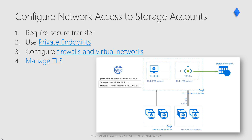Connecting to an Azure File Share over SMB without encryption fails when Secure Transfer is required for the storage account. Examples of insecure connections include those made over SMB 2.1, SMB 3.0 without encryption, or some versions of the Linux SMB client. By default, the Secure Transfer Required property is enabled when you create a storage account.